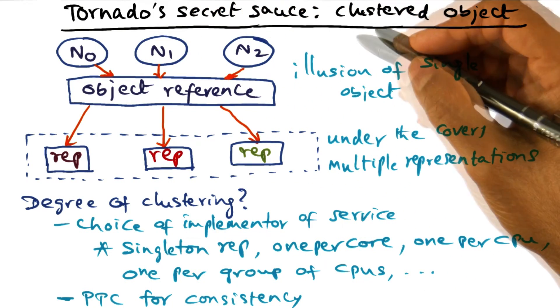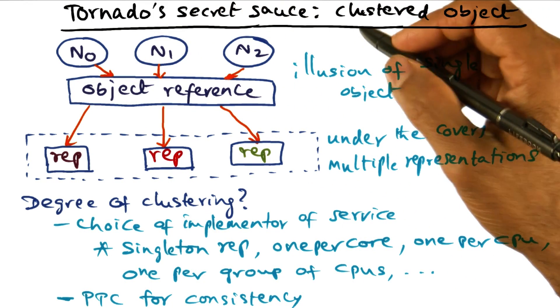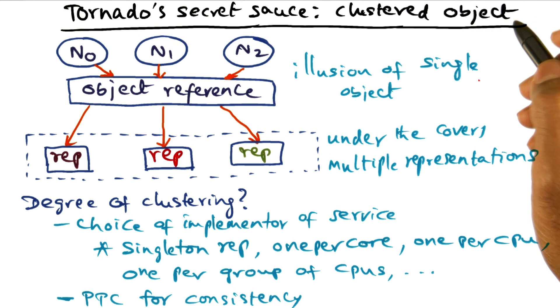The secret sauce in Tornado for achieving scalability is the concept called clustered object.